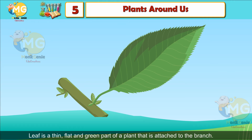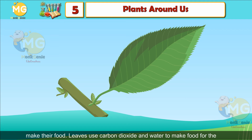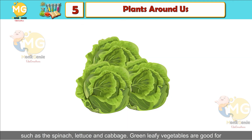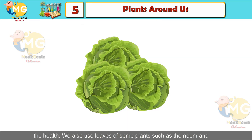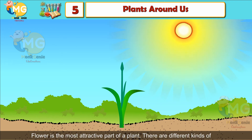A leaf is a thin, flat, and green part of a plant attached to the branch. Leaves come in different sizes, shapes, and colors. It is in the leaves that plants make their food, using carbon dioxide and water in the presence of chlorophyll and sunlight. We eat leaves of many plants such as spinach, lettuce, and cabbage. We also use leaves of plants such as neem and eucalyptus for medicinal purposes.